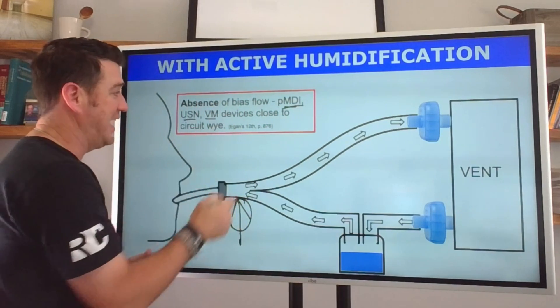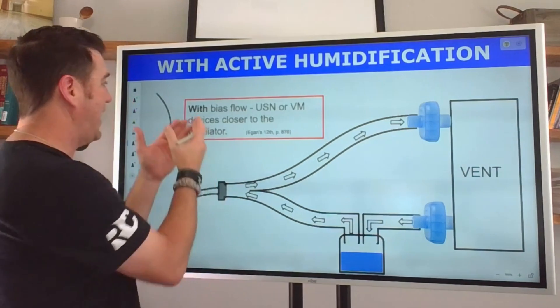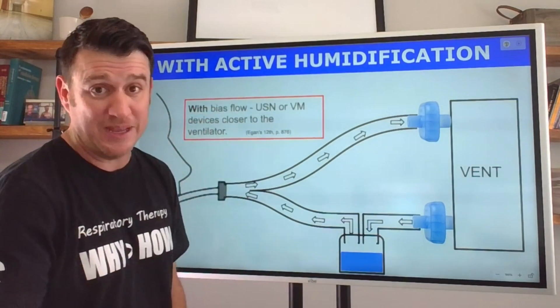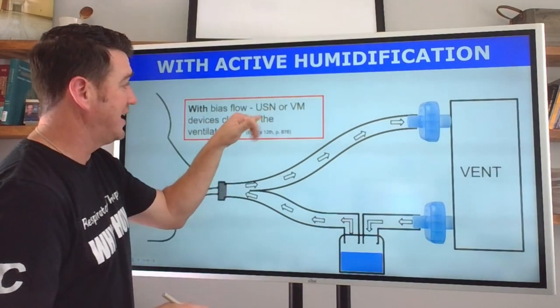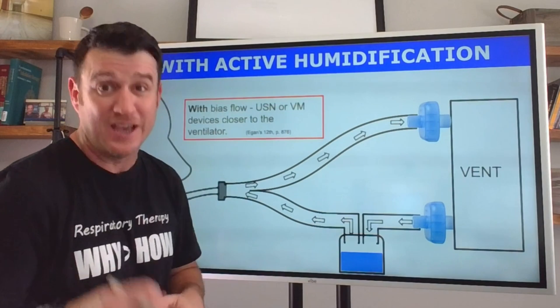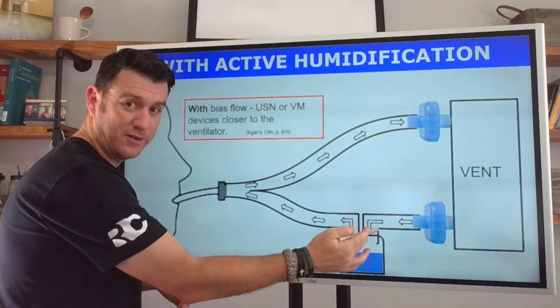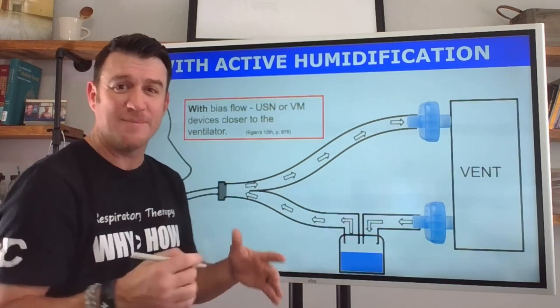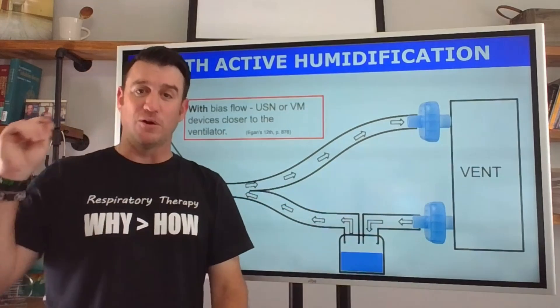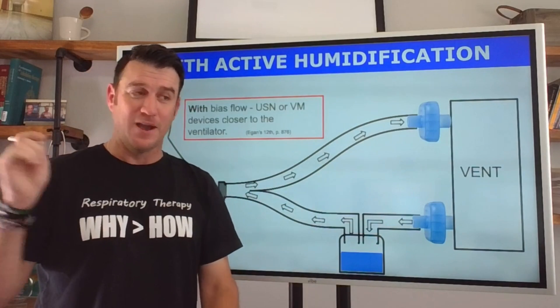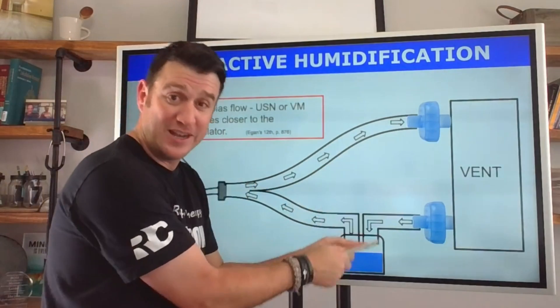What about if we have bias flow? What's recommended that showed the greatest level of deposition was an ultrasonic nebulizer or a vibrating mesh device closer to the ventilator. Without bias flow we're going closer to the patient but with bias flow we're going closer to the ventilator.